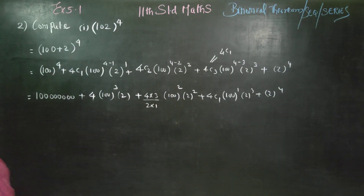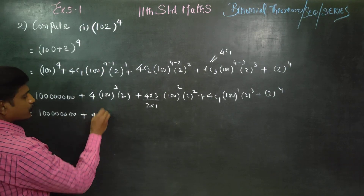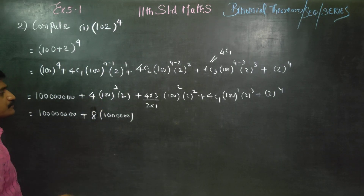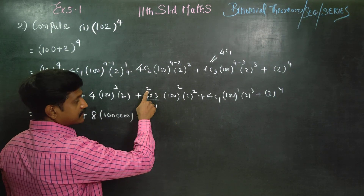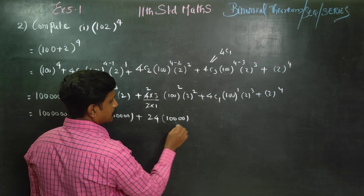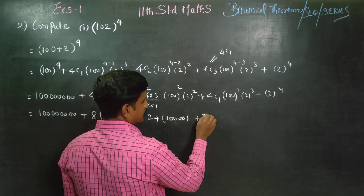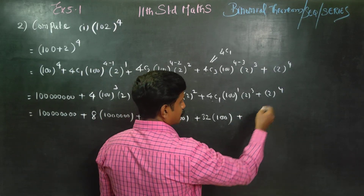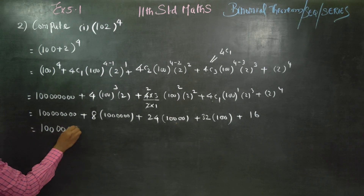Final simplification: 100^4 = 1,00,00,00,000. Then 4 × 100^3 × 2 = 8 × 100^3, which is 8 with 6 zeros. Then 6 × 100^2 × 4 = 24 × 100^2, giving 24 with 4 zeros. Then 4C1 = 4, so 4 × 100 × 8 = 32 × 100, giving 3200. And 2^4 = 16.